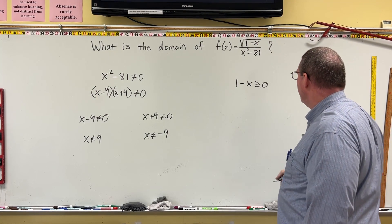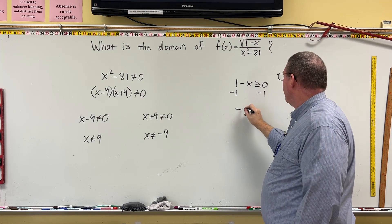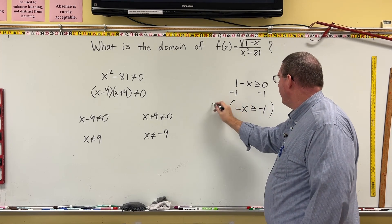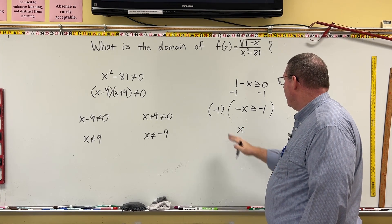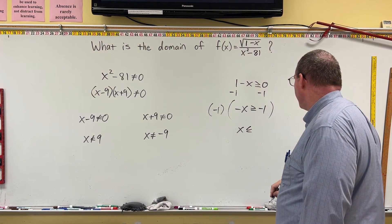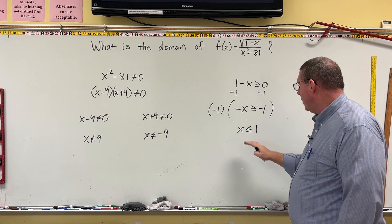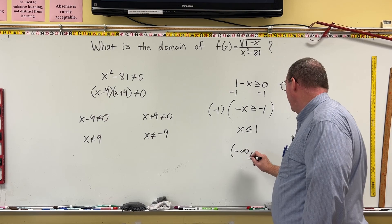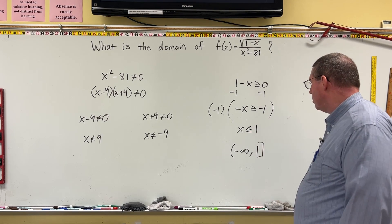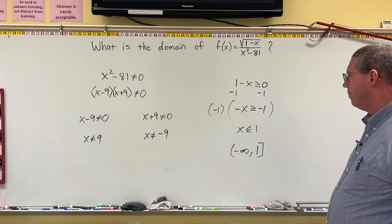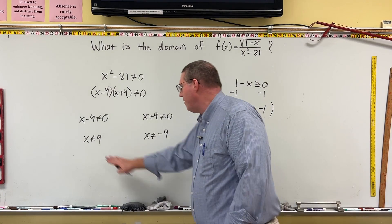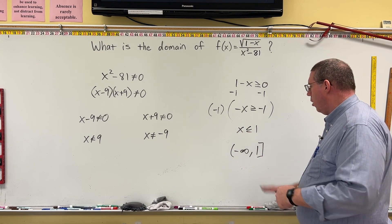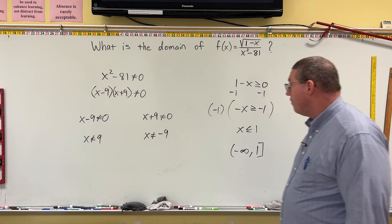Now for the numerator's domain restriction: we subtract 1 from both sides of 1 minus x ≥ 0 to get negative x ≥ negative 1. Multiplying by negative 1 reverses the inequality, giving x ≤ 1. Our domain here is negative infinity up to 1 with a bracket, since we have the 'or equal to.' So we go negative infinity up to 1.